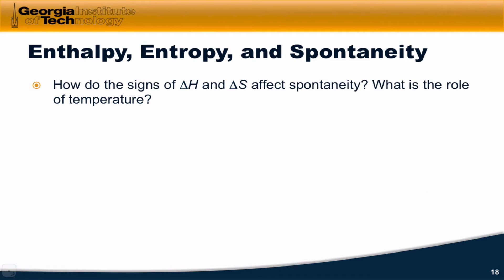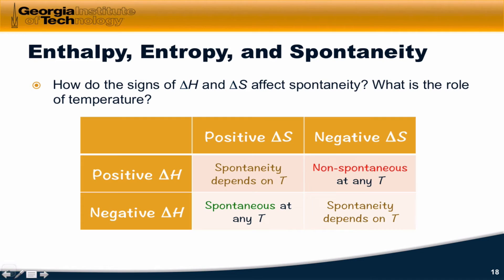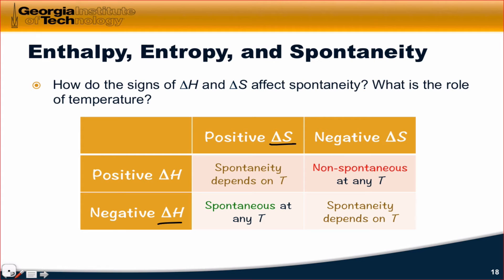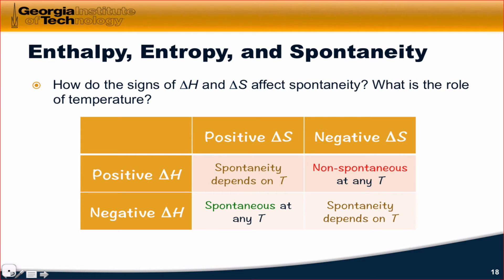Let's organize this more carefully by thinking about how the signs of delta H and delta S relate to spontaneity, and the role of temperature. If delta H is negative and delta S is positive, then delta H minus T delta S is necessarily less than zero, since delta H is less than zero and delta S is greater than zero, making the entire term negative. In that case, no matter what the temperature is, the process is always spontaneous since delta G is always less than zero.